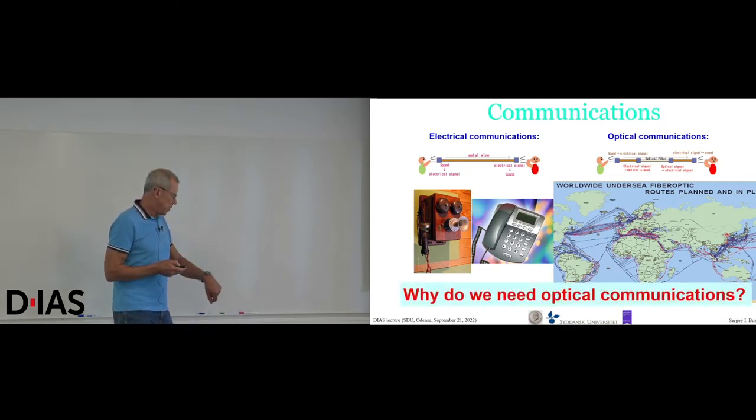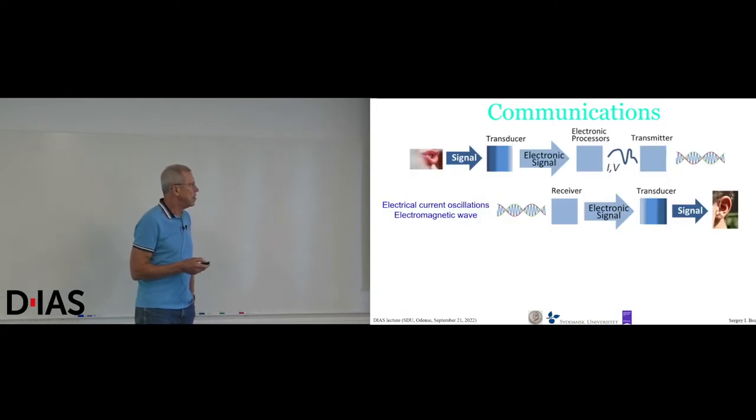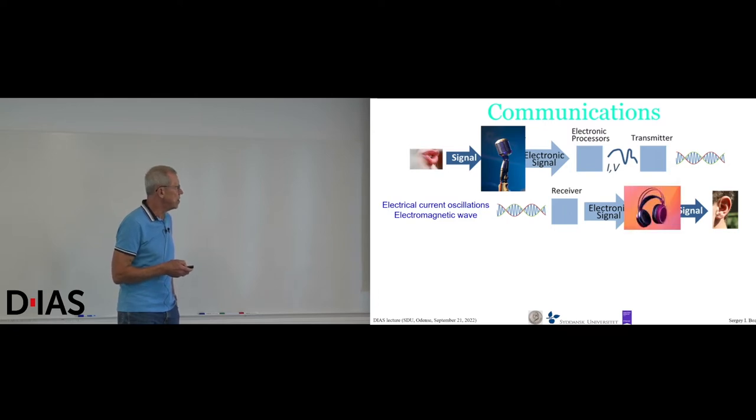But why do we need optical communications? So here's really the point that I would like to lead you to the reasoning to have optical communications. Here's a little bit more detail of what is going on in any communication, where we have signal, transducers to electronic signal, processors that are given this electronic signal. And then what happens? This electronic signal is put as envelope on the electromagnetic wave. This electromagnetic wave does not have to be light. It can be just radio waves, usual radio transmitter. But this is the envelope, it's a signature of the signal here. And then it comes to the receiver with inverse transformation.